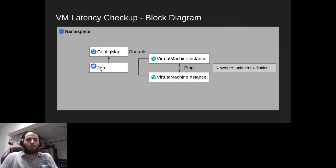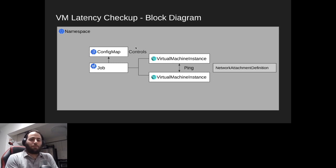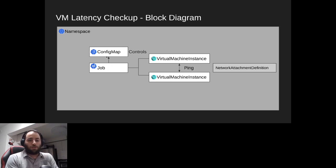Let's give a concrete example. This is the VM latency checkup — a checkup that tests that two virtual machines can communicate over a network and also measures their network latency. We have a ConfigMap that you use to configure your checkup and receive the results at the end. You have a Job that refers to this ConfigMap to read the configuration and write the results.